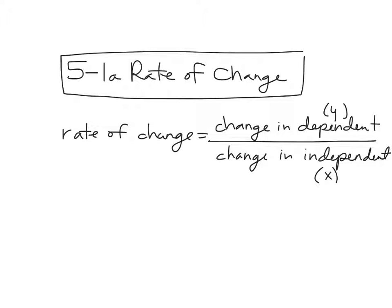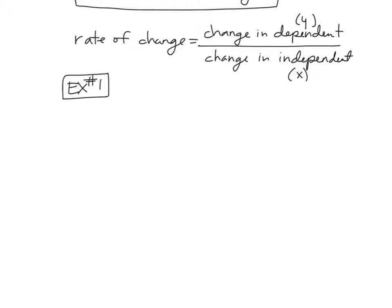So rate of change. I'm going to give you for this first example a chart. And in this chart, my independent is time in minutes. And my dependent is distance in feet.